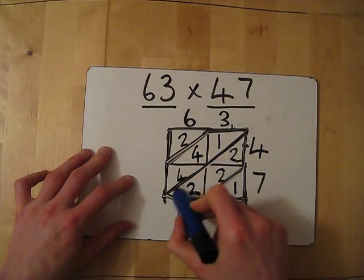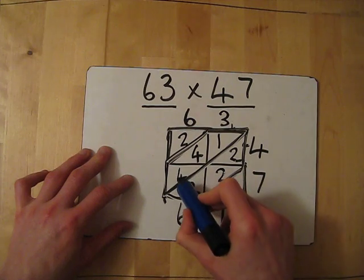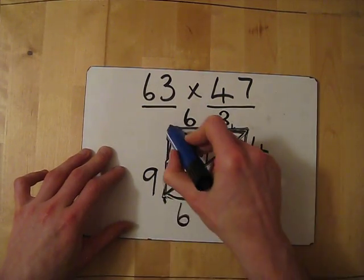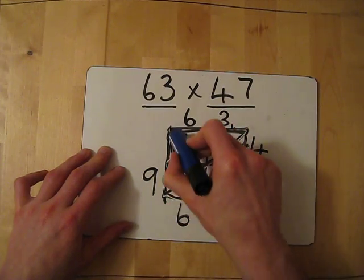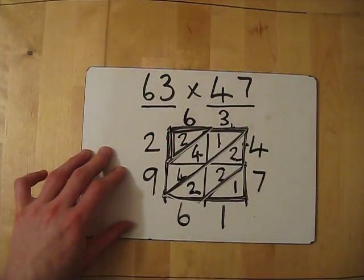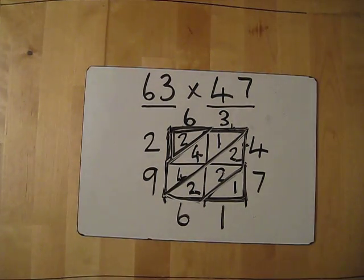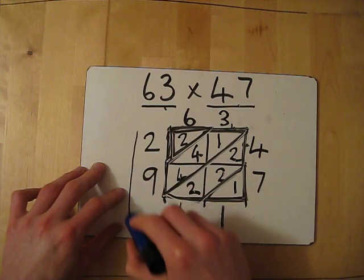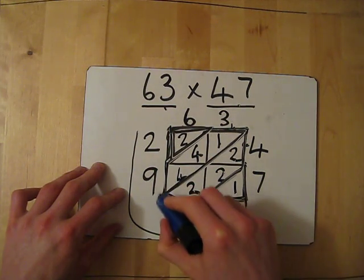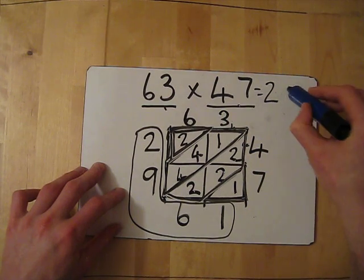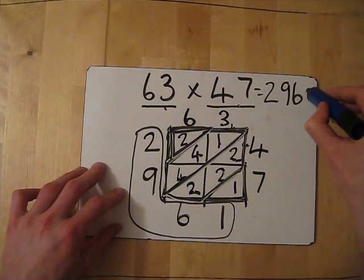Then again, move along to the next diagonal. So, I've got 4 plus 4 plus 1 gives me 9. And the final diagonal, add it up and that gives me 2. And the answer for 63 times 47 is around the outside of the grid. So, it equals 2,961.